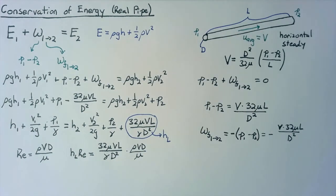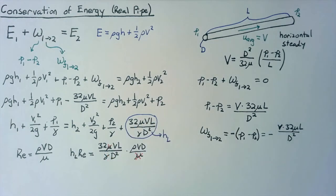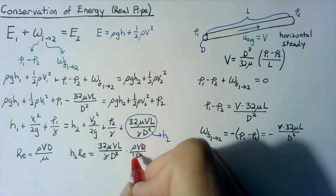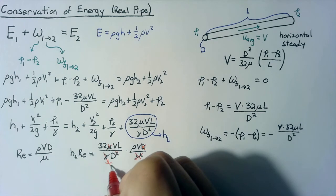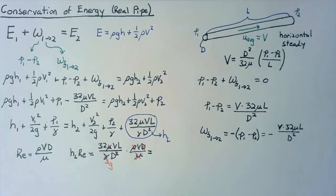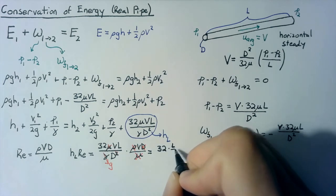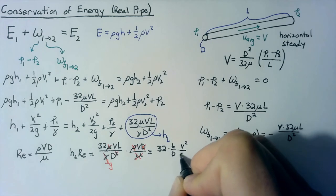And when we do this, a decent number of things cancel out. First off, we get to get rid of these mu's. Second, one of the D's goes away here. And if we divide gamma by rho, this becomes a G. Written out, this becomes 32 times L over D multiplied by V squared divided by G.